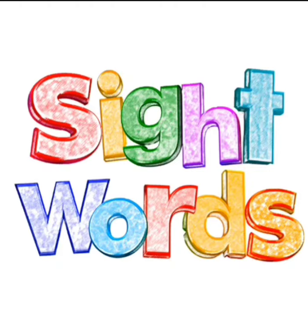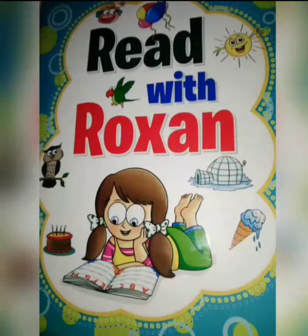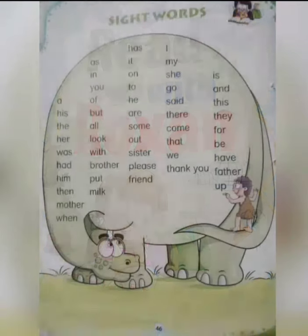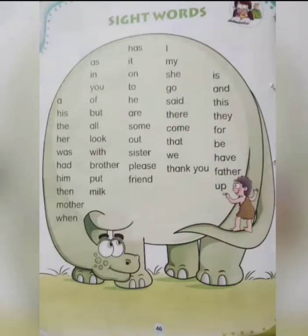Aapki Roxan book ka, jo aapke paas English ki Roxan book hai, uus ka page number forty-six — jis me ye sight words hai. To bachyo, aapko ye baar baar read karne hai aur proper way me read karne hai, taaki aapko inko bolne ki practice ho jaye.